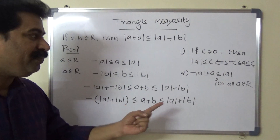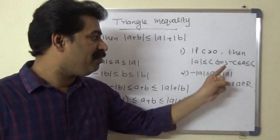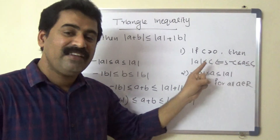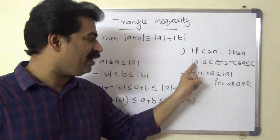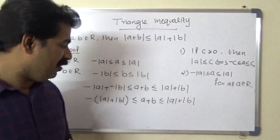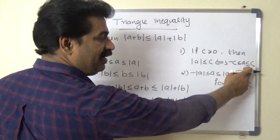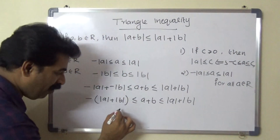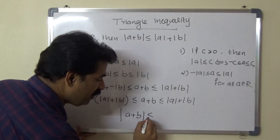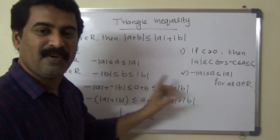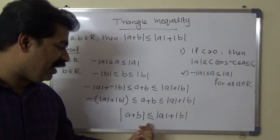This is now in the form -c ≤ a ≤ c, where a is a + b and c is |a| + |b|. Applying the first property — if -c ≤ a ≤ c then |a| ≤ c — we conclude that |a + b| ≤ |a| + |b|.